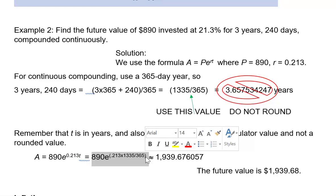And I'm going to type 890 second or shift LN to access the e to the exponent power. If your calculator does not open a parentheses for you, you will need to do so by pressing the open parentheses above the 8. And then type in .213 times 1335 divided by 365, close parentheses, enter or execute. And you should get something that looks like this, which is a dollar amount. So we round that to $1,939.68.